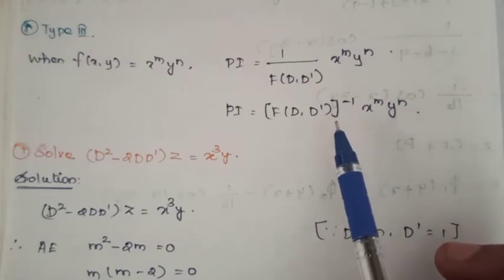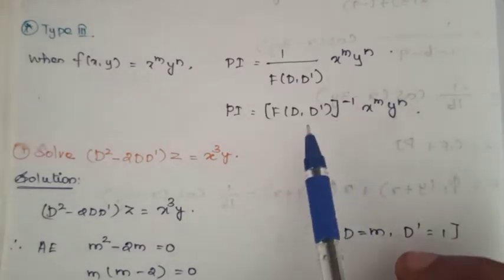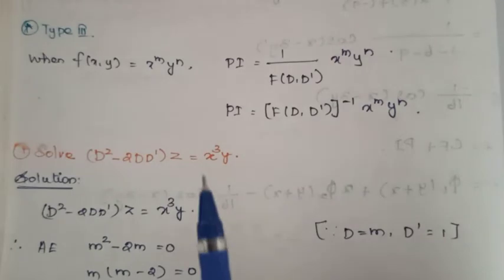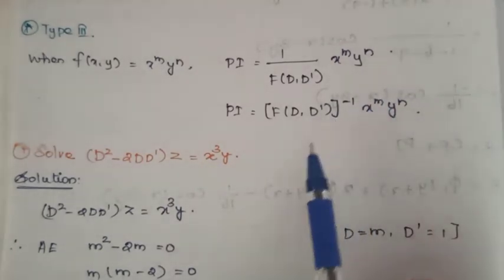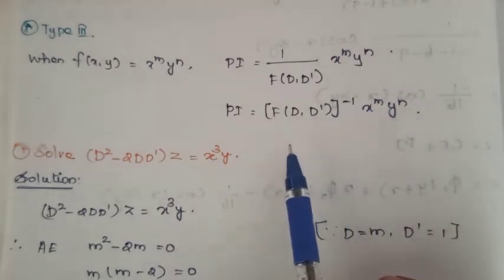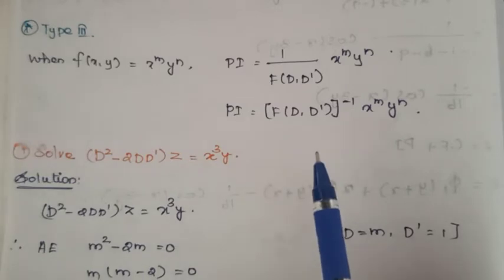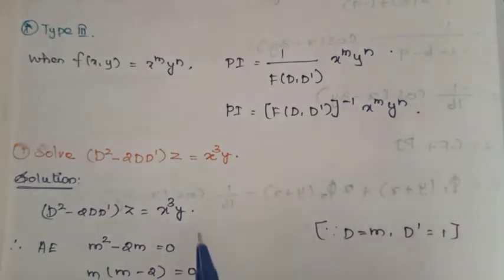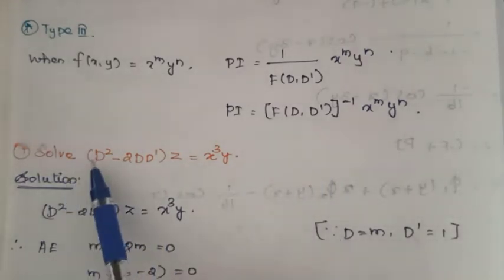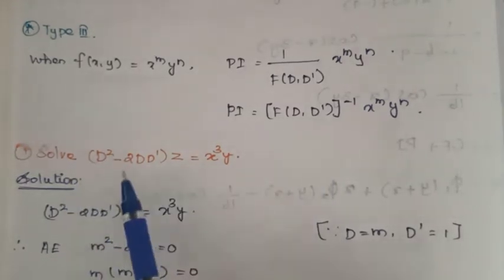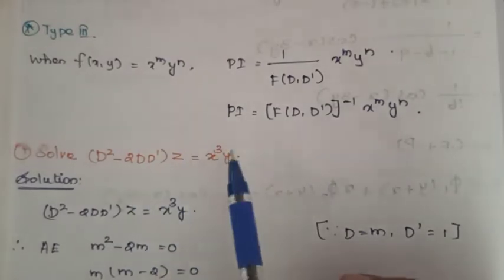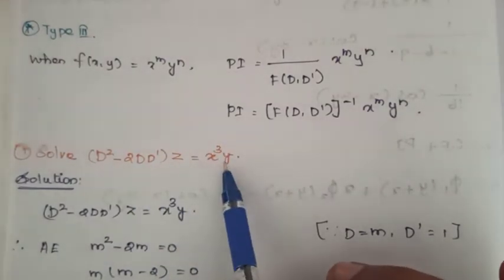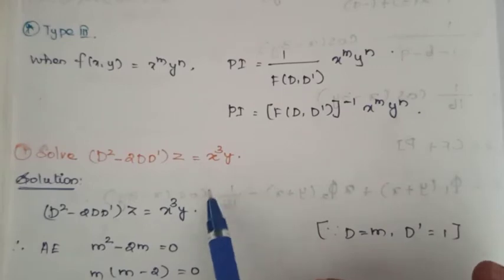The complementary function is the same type as before. The particular integral changes — how the right side of the equation changes, the particular integral value is different. Let us see the problem: solve D squared minus 2D D' into z is equal to x cubed into y power 1.